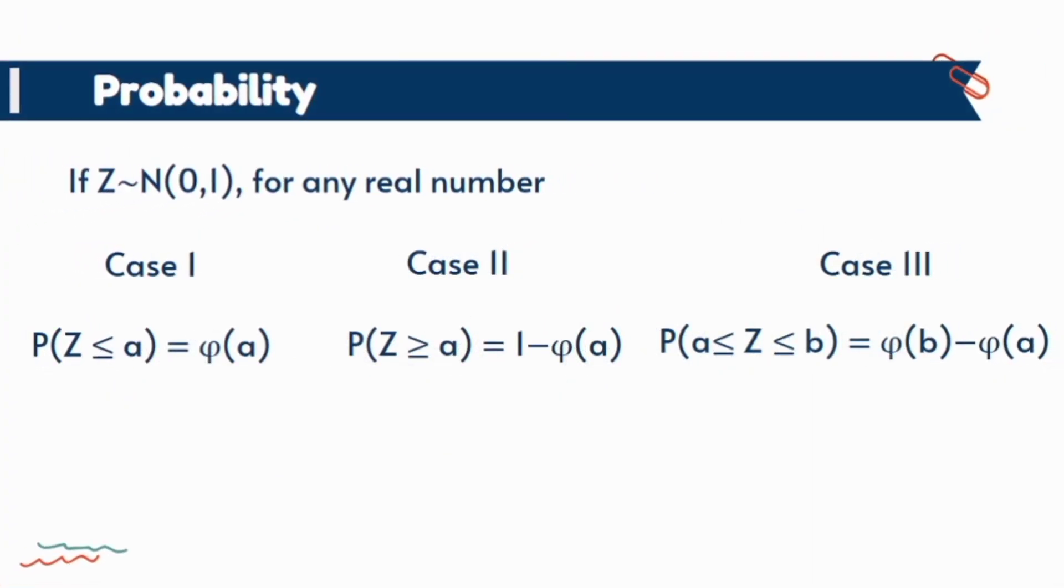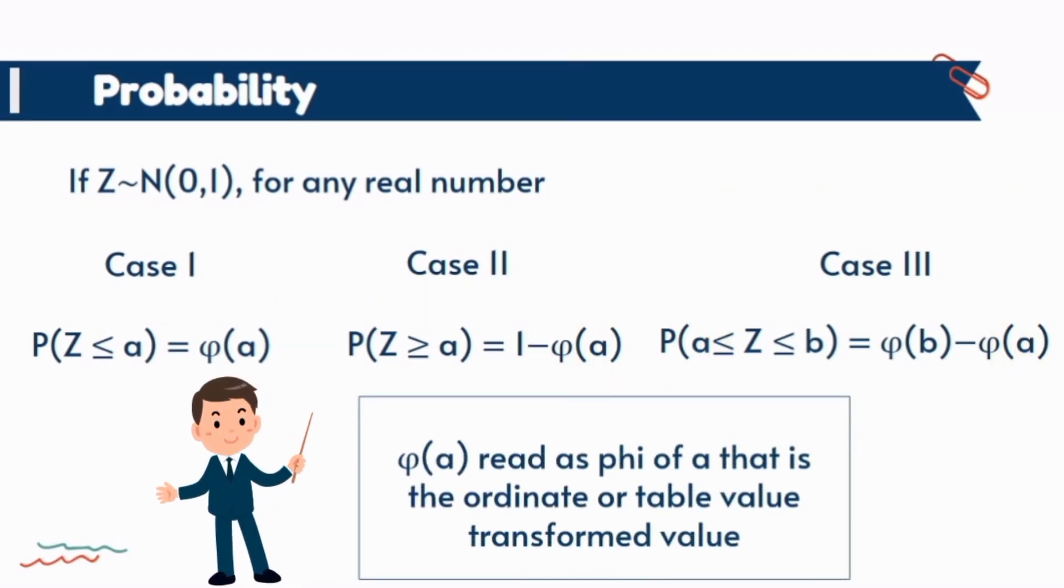After transformation we follow these three cases mostly in our practical life. If this situation happens after transformation with less than sign, we directly check the probability of transformed numerical value. The second case is about greater than sign, so here we first check the table value of transformed constant value and then subtract it from one. And if there are two values as given in third situation, then we subtract the table value of smaller transformed value from table value of larger transformed number.